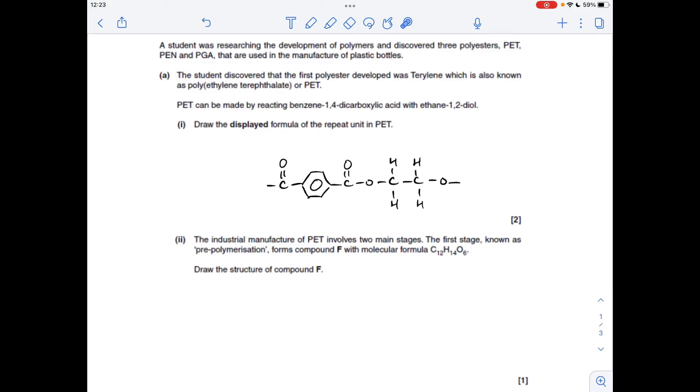Next part's a little bit tricky. We're told about this pre-polymerisation process and we've got to come up with a structure that has this molecular formula. Obviously our reactants are the benzene 1,4-dicarboxylic acid and ethane 1,2-diol. If we think about the number of carbon atoms in those, you've got 8 in your benzene 1,4-dicarboxylic acid and 2 in the ethane 1,2-diol.